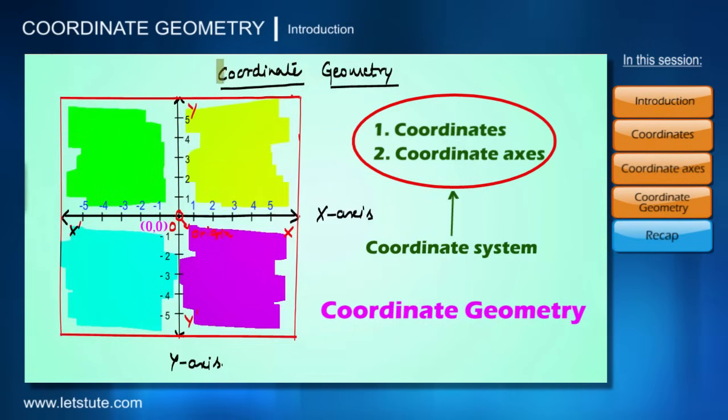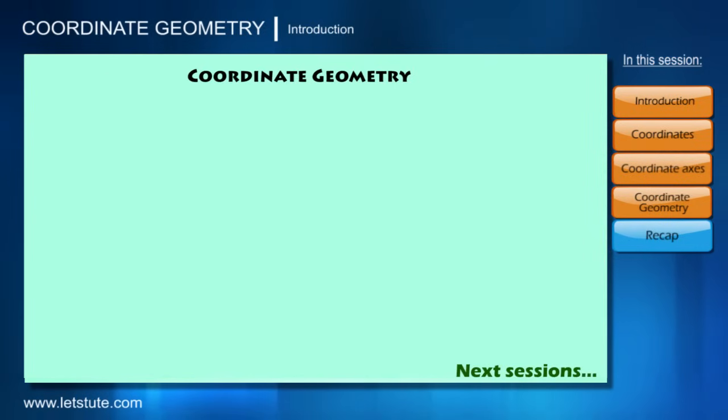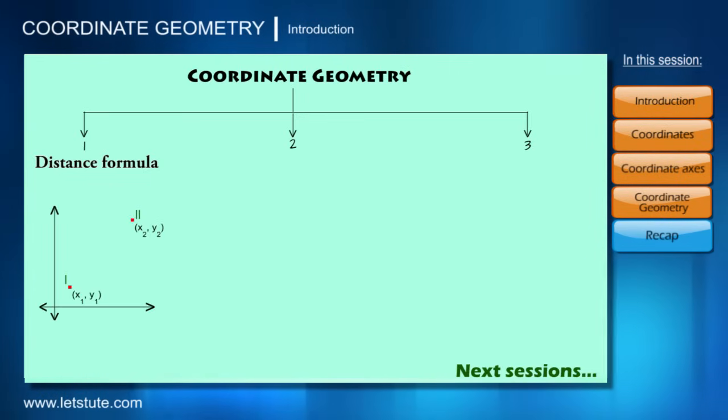That is our title. In the next few sessions, we are going to learn three important concepts under coordinate geometry. Number one: distance formula. In this formula, we will learn how to find the distance between two points when their coordinates are given. The next concept is section formula.